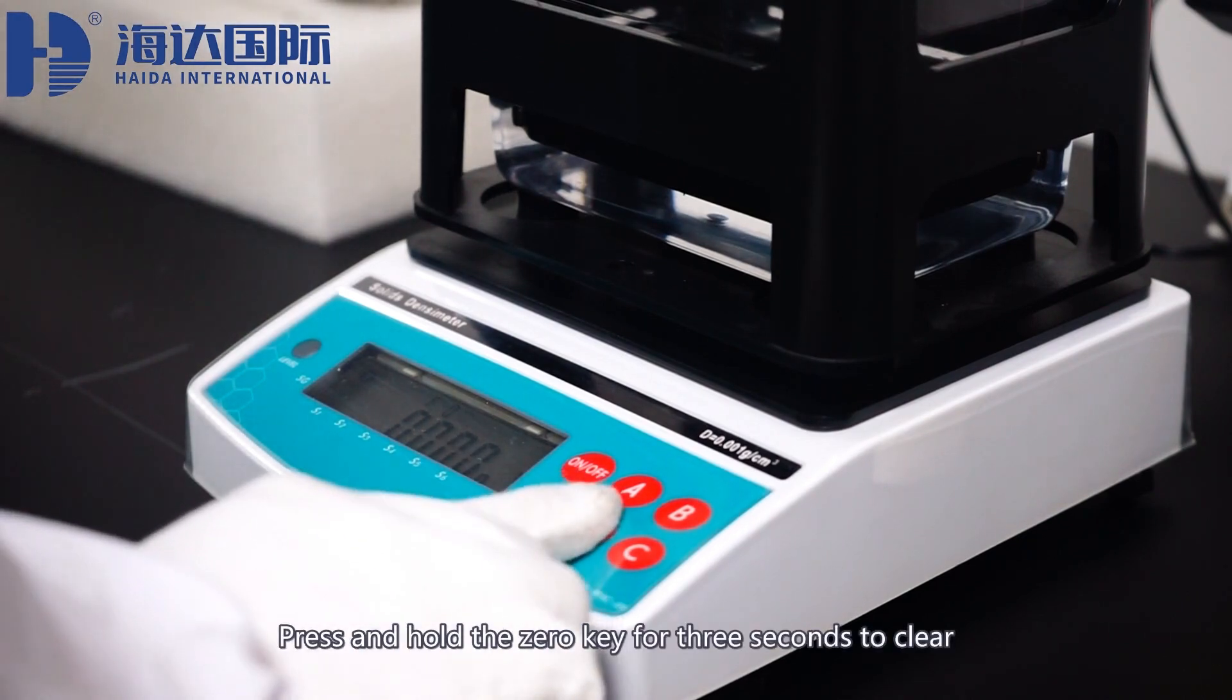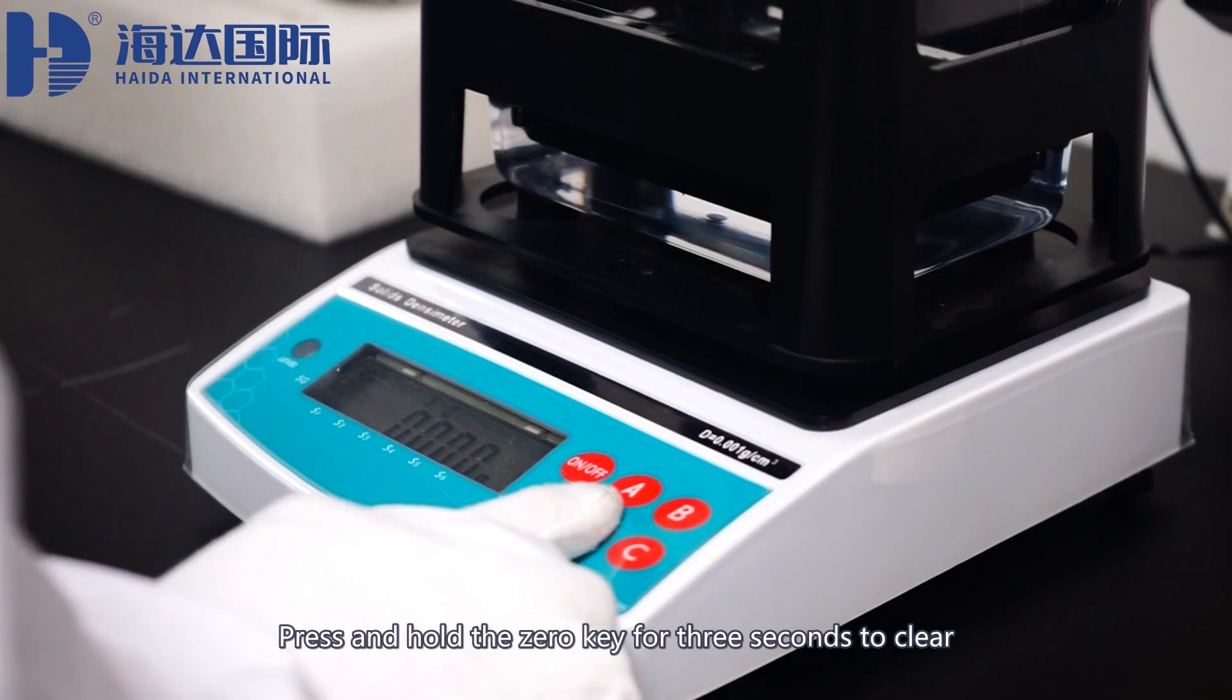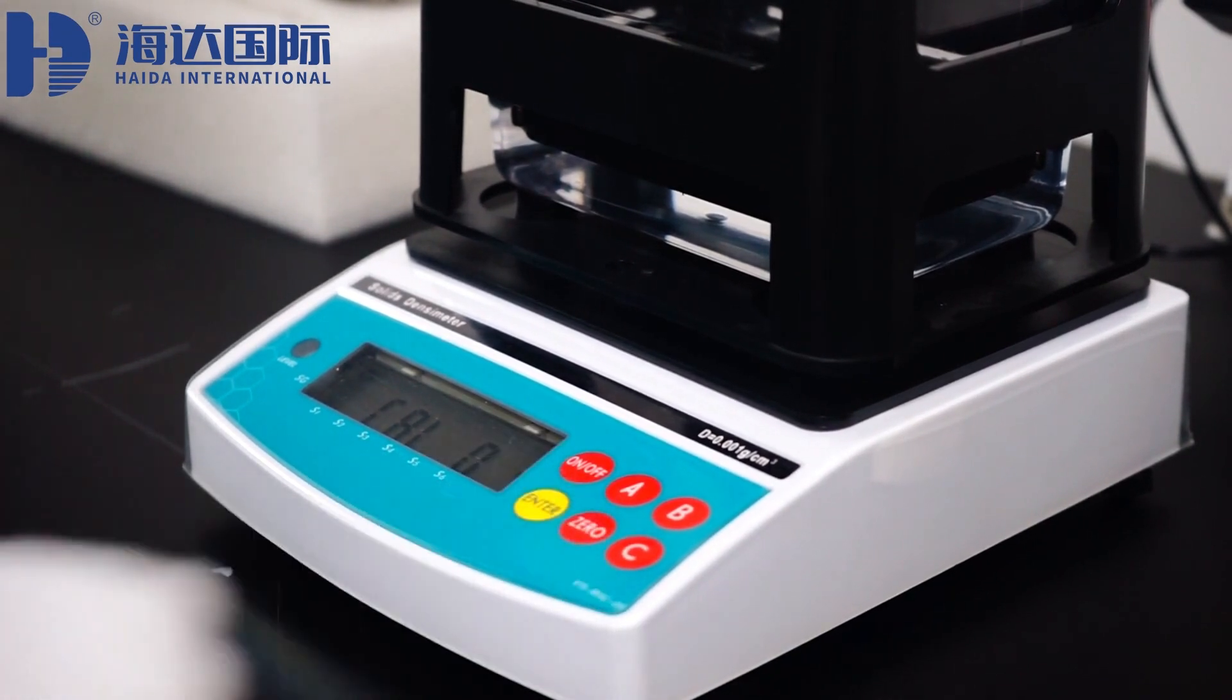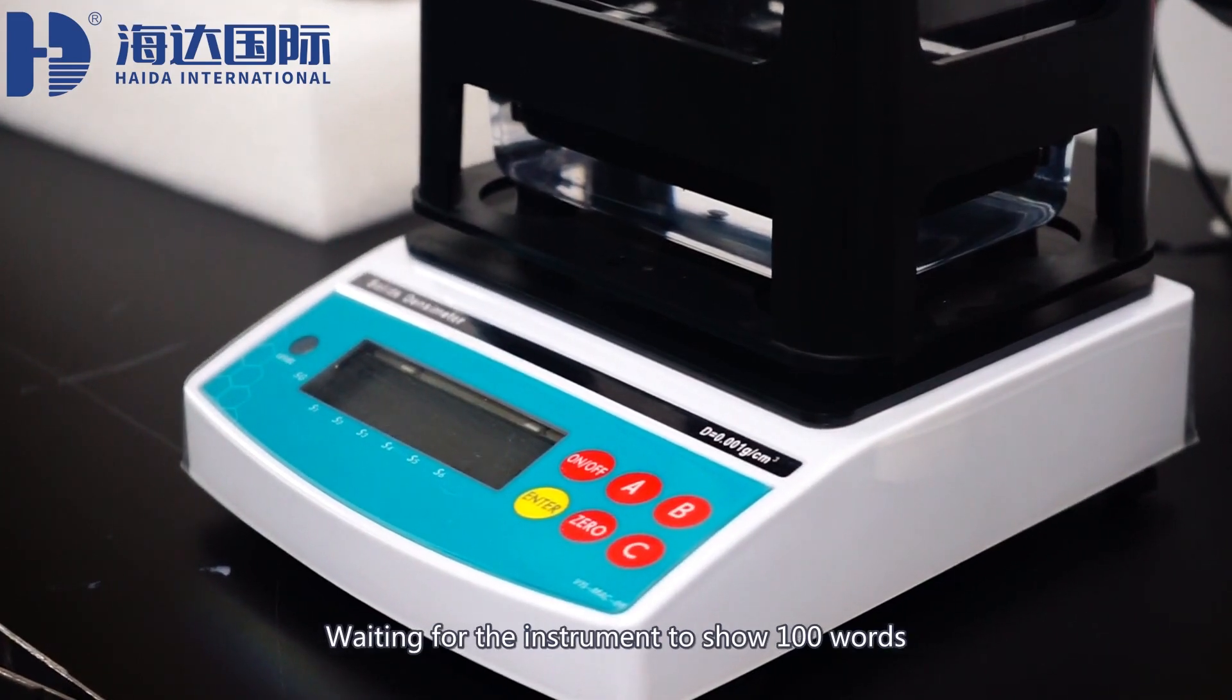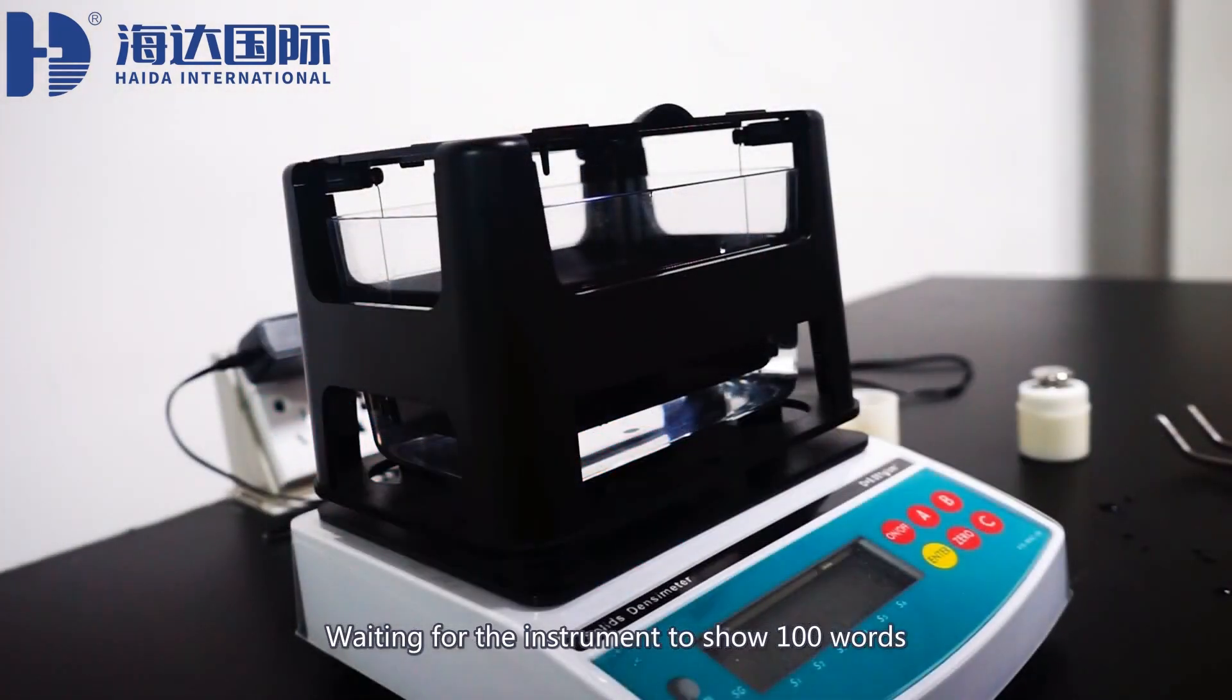Press and hold the zero key for 3 seconds to clear. On screen display of the CRL logo, waiting for the instrument to show the calibration value.